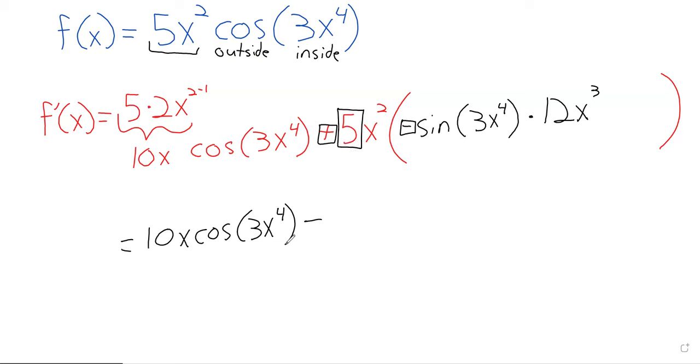This 5 and this 12 will give us a 60. This x squared and this x cubed will give us an x to the 5th times the sine of 3x to the 4.